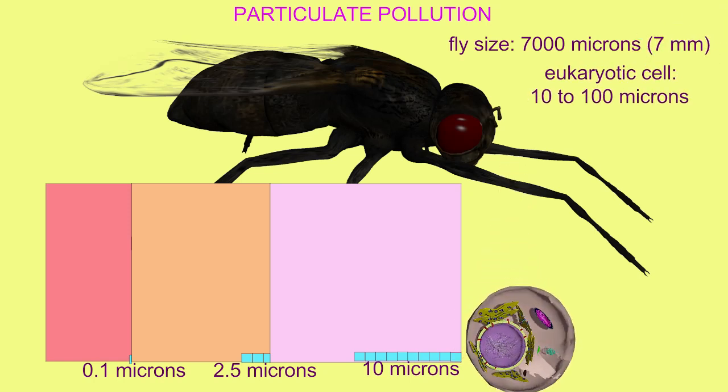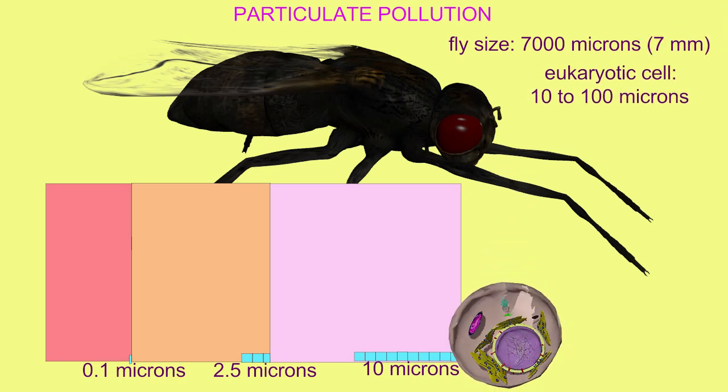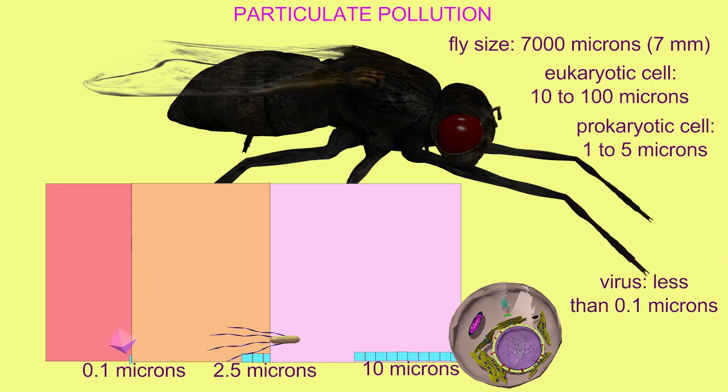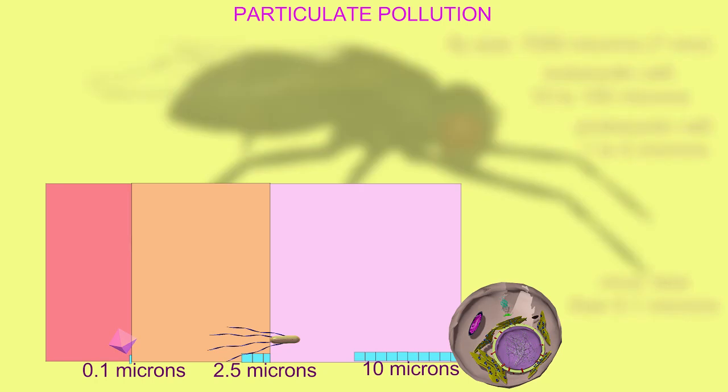This eukaryotic cell can measure between 10 and 100 microns in length. Bacterial cells often measure between 1 and 5 microns. And viral particles are smaller and can measure less than a tenth of a micron. We'll put these on this graph as references.